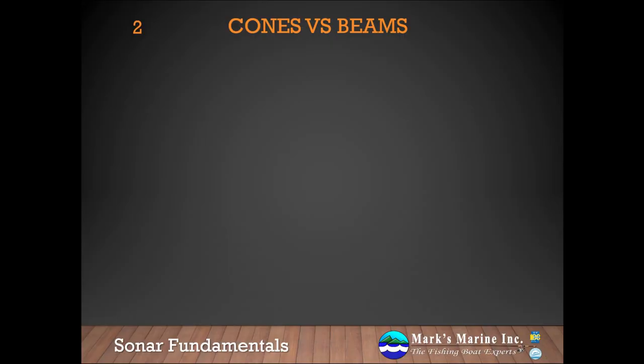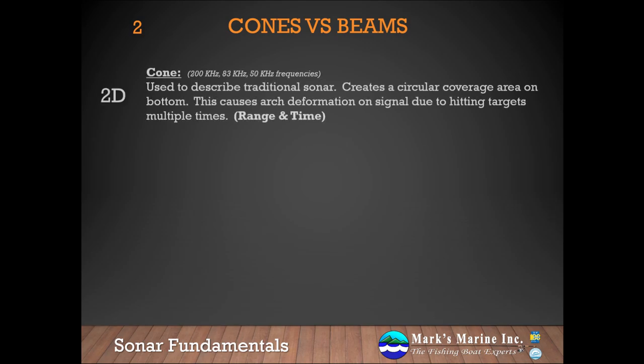So how does structure scan differ from traditional sonar? Traditional sonar can be thought of as a cone. It typically comes in frequencies like 200 kilohertz, 83, or 50. It creates a circular coverage area on the bottom and creates the arch deformation that we're used to, and it measures range and time.